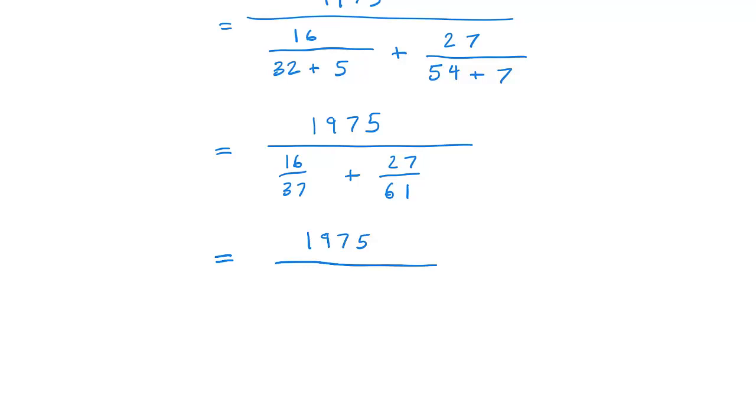The only thing that we can do is multiply top and bottom by 37 and 61 and then add the fractions together.